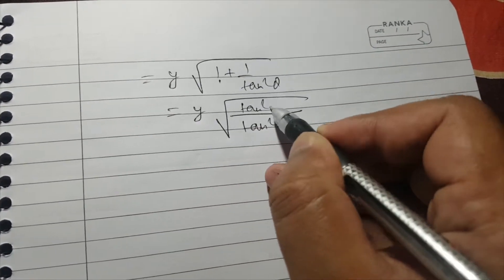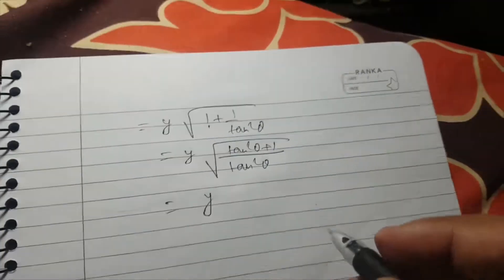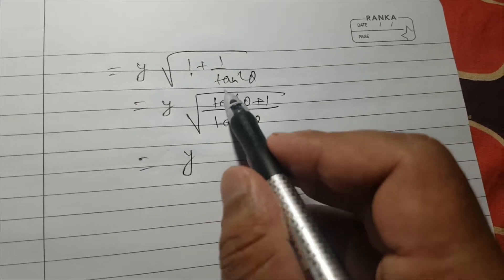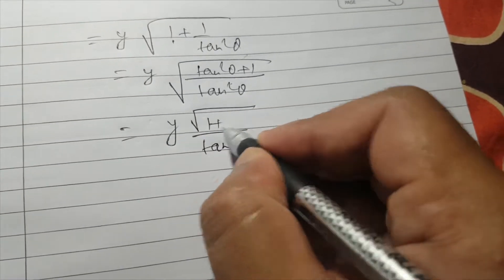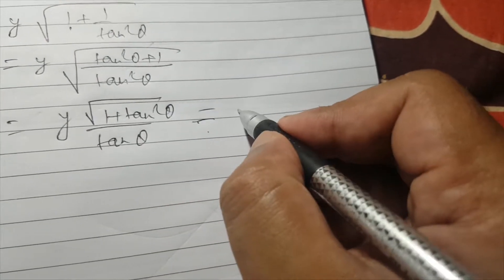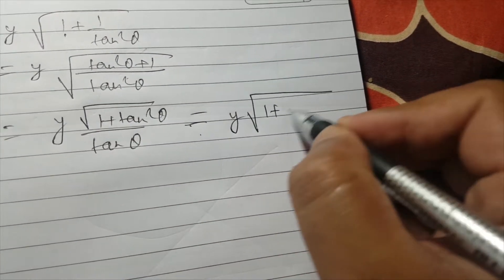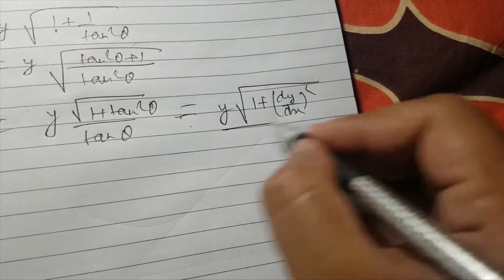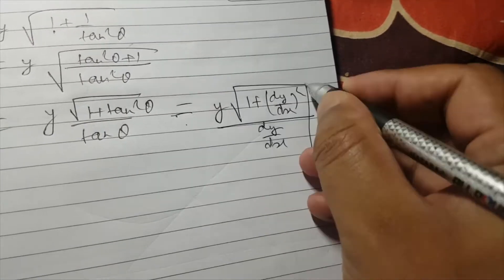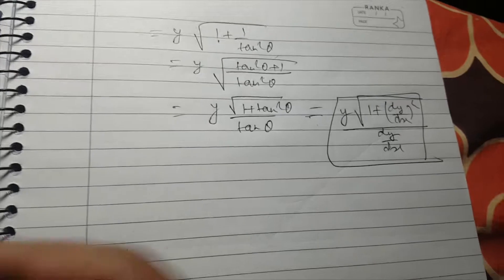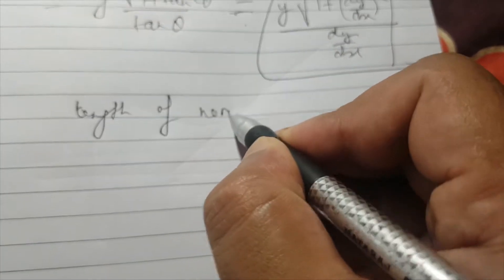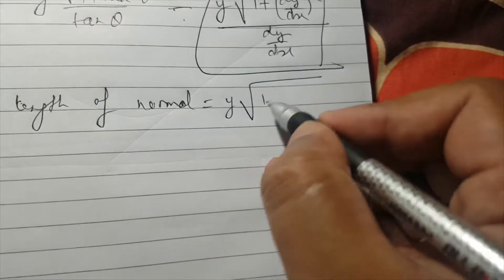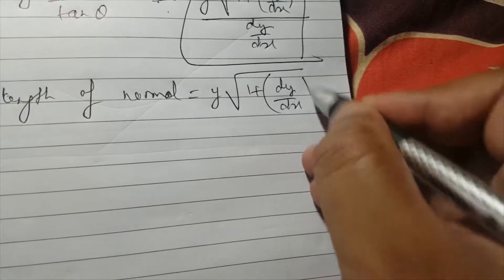After simplification, using tan(theta) equals dy/dx, the length of tangent comes out to be y times the square root of (1 + (dy/dx)²), divided by (dy/dx). Similarly, working through the triangle for the normal, the length of the normal equals y times the square root of (1 + (dy/dx)²).